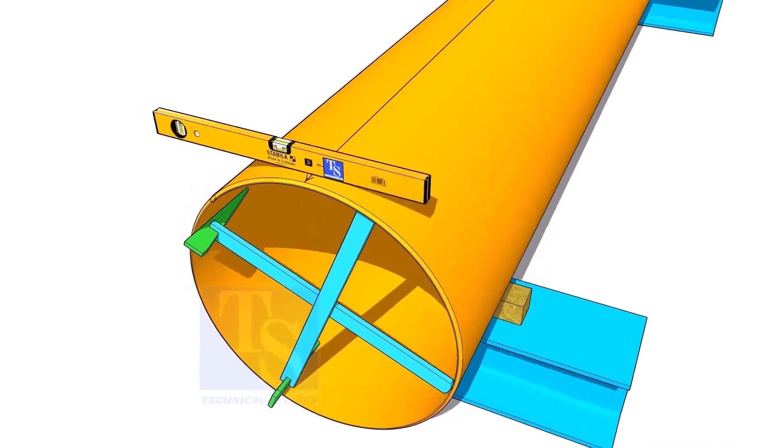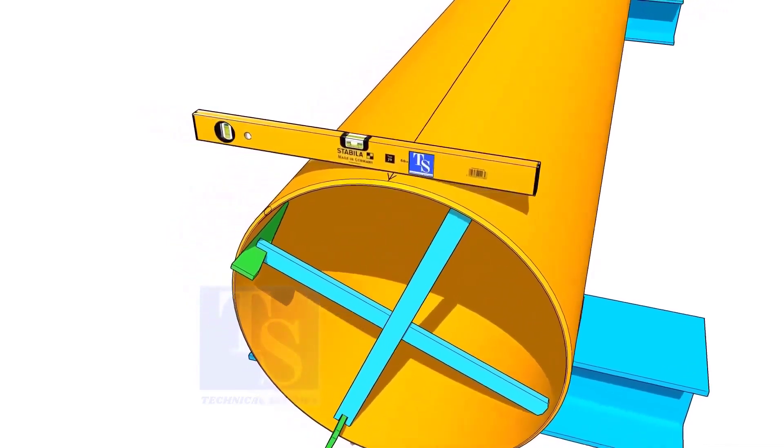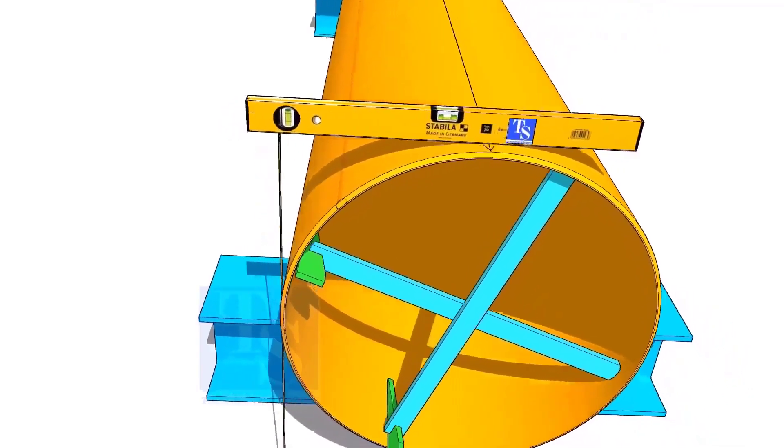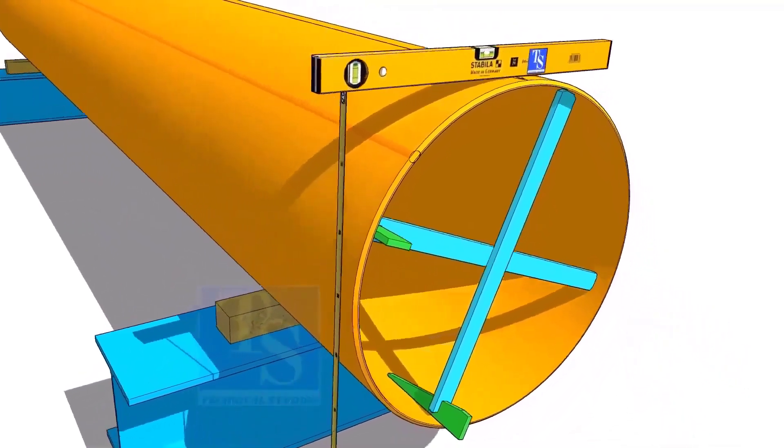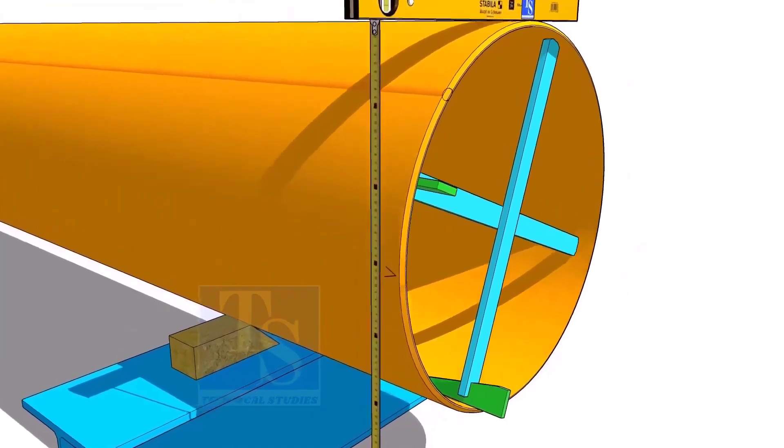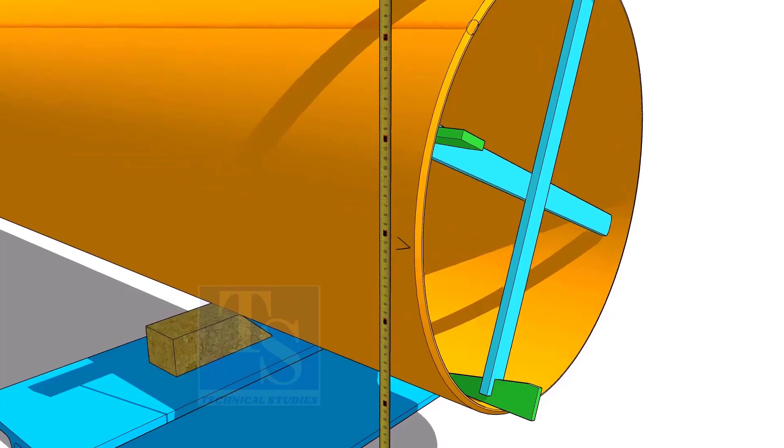Another method to mark the center line is, hold the level bottle horizontal and mark half OD on the side of the pipe. The advantage of this method is you can mark two opposite center lines at the same time.